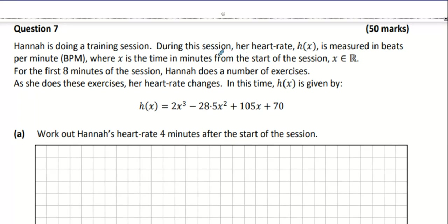During this session her heart rate h is measured in beats per minute where x is the time in minutes from the start of the session, so that means it starts off at x equals zero. For the first eight minutes of the session Hannah does a number of exercises. As she does these exercises her heart rate changes. In this time h is given by this here.